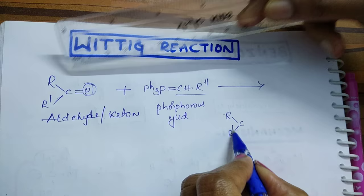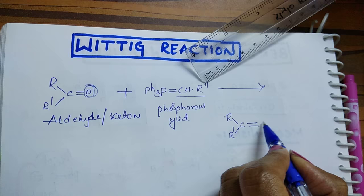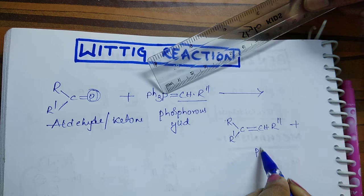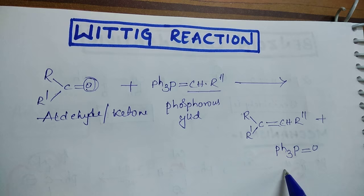...bond, and it exchanges its part with this phosphorus ylide part CHR', and it gets Ph3P=O, and it exchanges with this oxygen. This is called triphenyl phospho oxide.